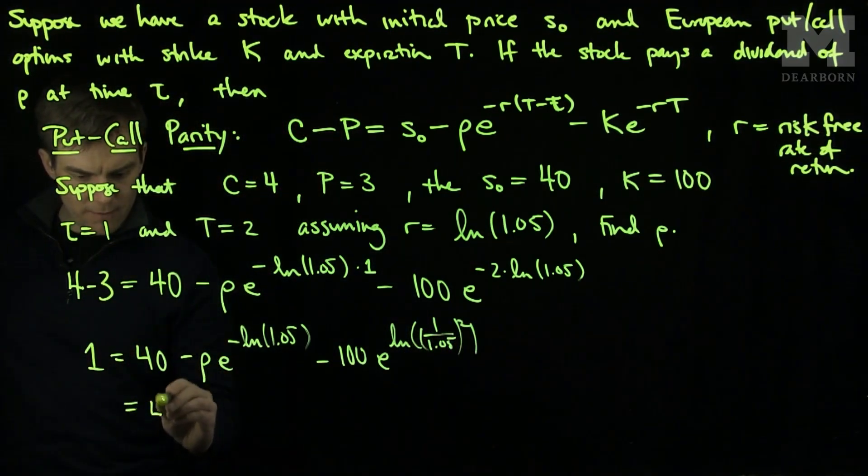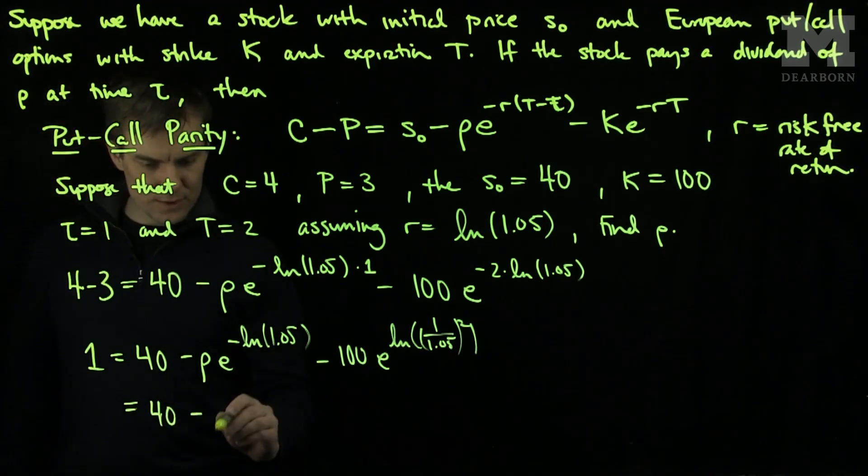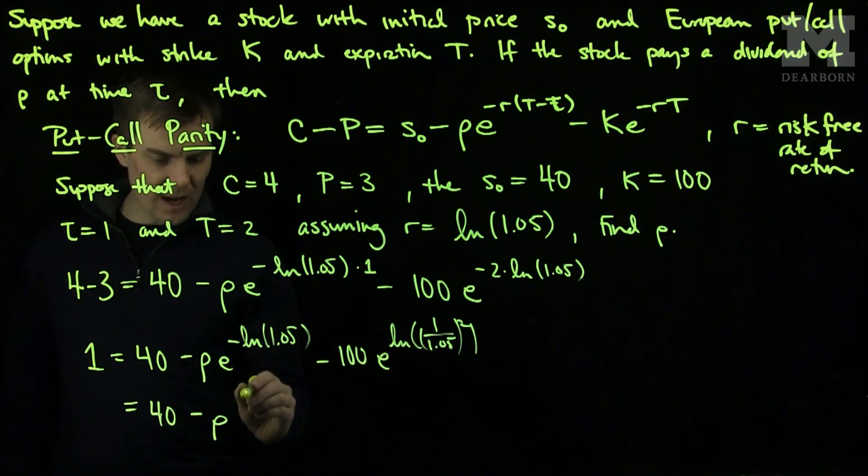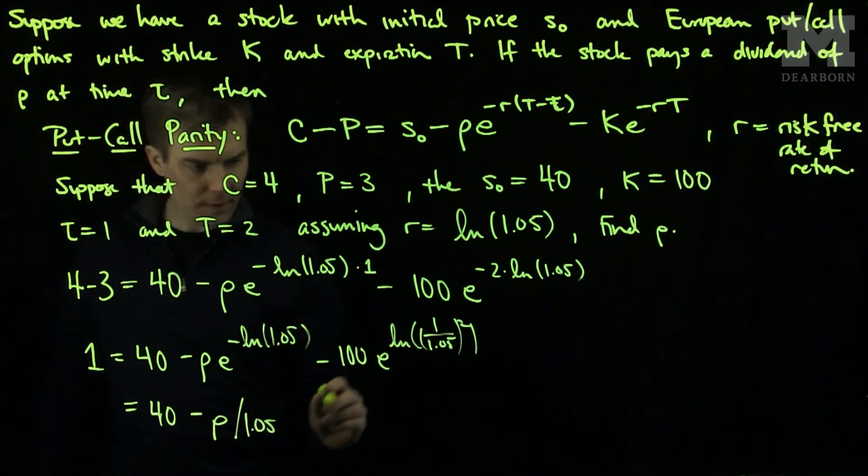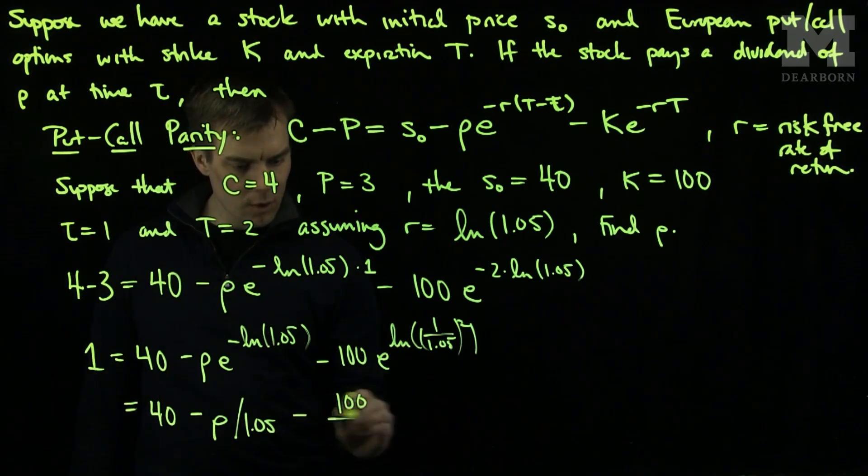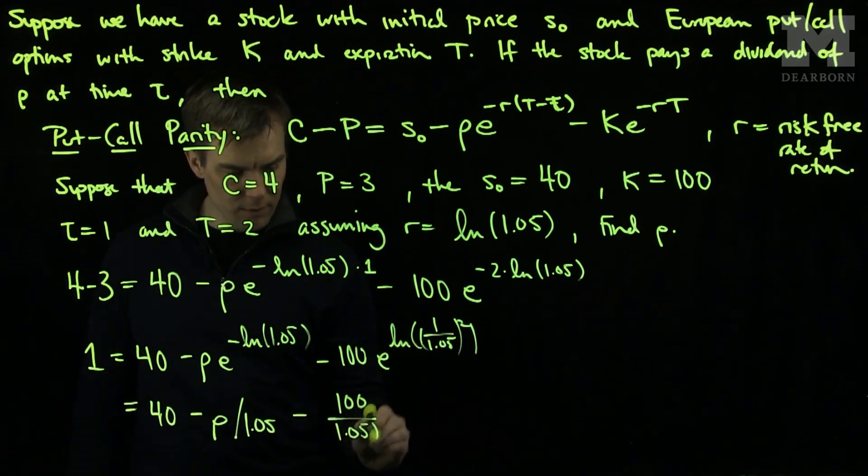In simplifying this, we see that 40 minus rho, and then e to the negative log of 1.05 is the same as dividing by 1.05. And then what we have over here is minus 100 over 1.05 quantity squared.